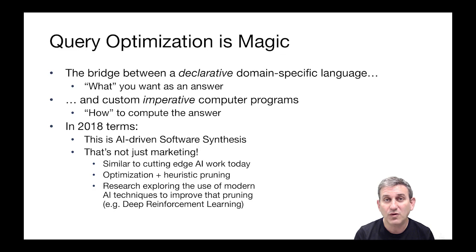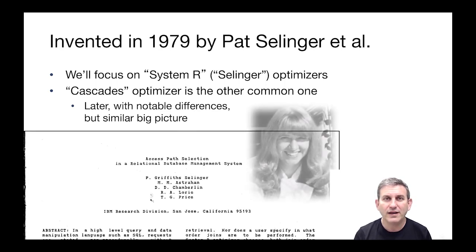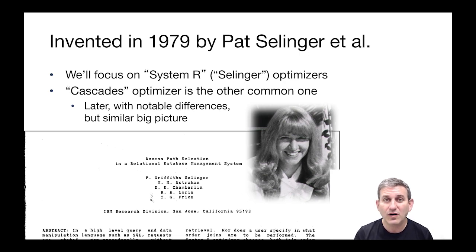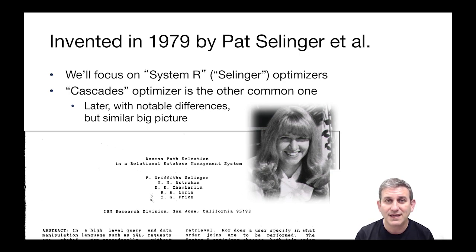Query optimization as we know it today was invented in 1979 by Pat Selinger et al. at IBM Research, in the context of a system called System R — one of the first pioneering relational database systems and one of the most influential systems in computer science history. We'll talk about the Selinger optimizer, also called the System R optimizer. There was also later work on an optimizer architecture called Cascades, which is commonly used today.